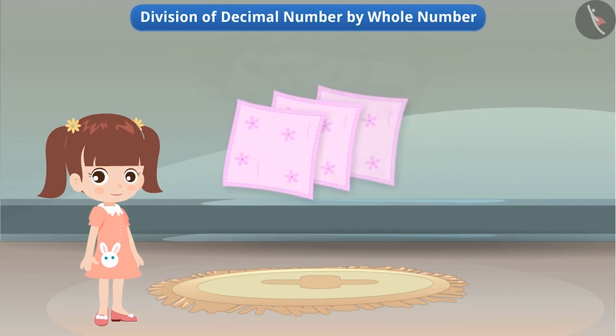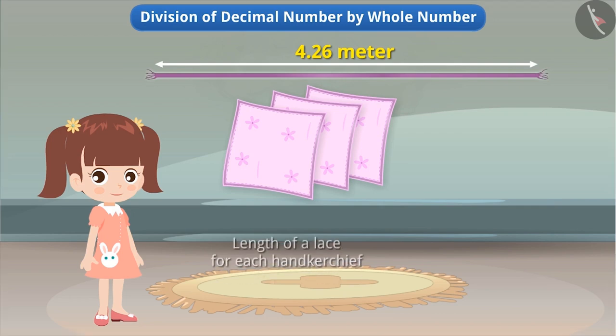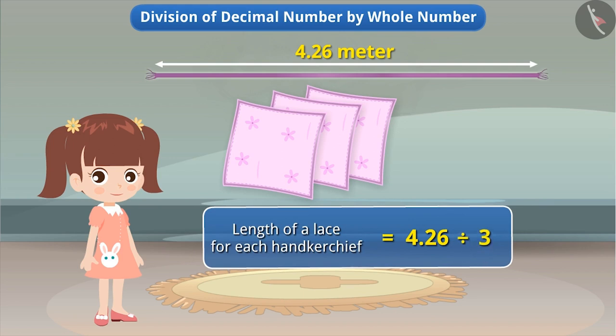Manisha bought three identical handkerchiefs from a shop. To decorate them, she attached laces around them. If she used 4.26m long laces to decorate all three handkerchiefs, how much lace would she have used for each handkerchief? To find this, we have to divide 4.26 by 3. Here, we have to divide the decimal number by a whole number. Let's solve it.